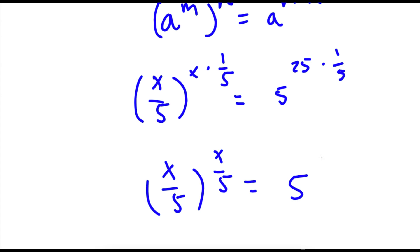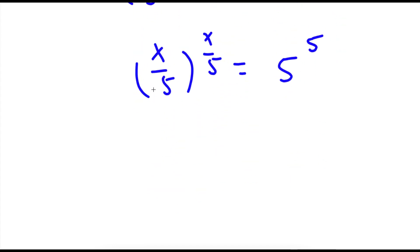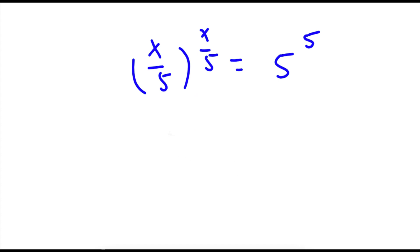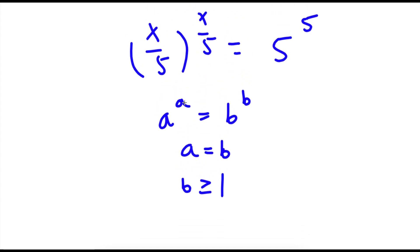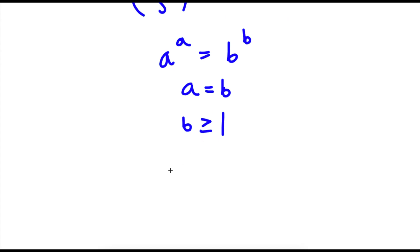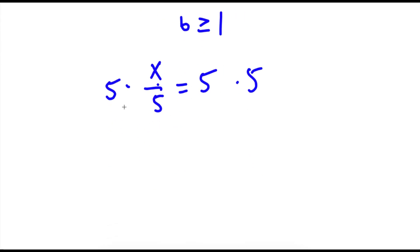25 times 1 over 5 is simply 5, so I have x over 5 to the power of x over 5 is equal to 5 to the power of 5. Now if I have something in the form a to the power of a equals b to the power of b, this means a equals b, as long as b is greater than or equal to 1. Here b is 5, so a equals b, meaning x over 5 equals 5. Multiplying both sides by 5, these cancel and x equals 5 times 5, which is 25.